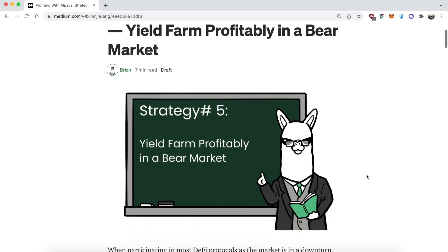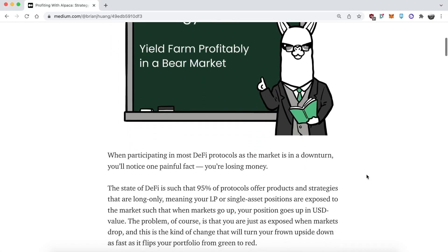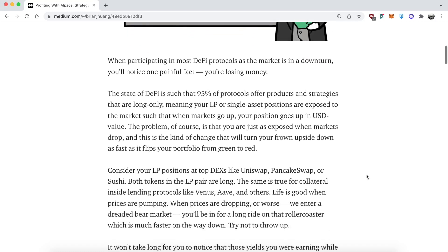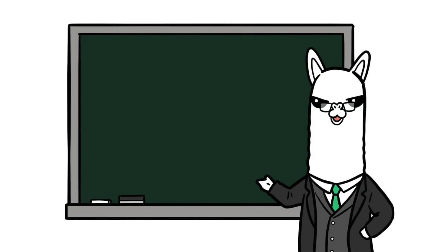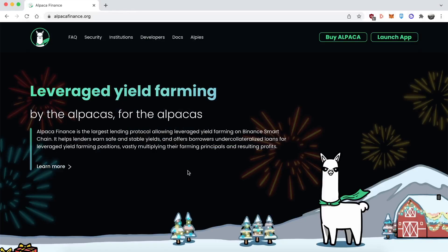This strategy is suitable for bear markets where you can gain upside by opening leveraged yield farming positions and borrow crypto assets such as BNB, ETH, or BTCB that you believe will drop in price. Borrowing above 2x is similar to shorting the asset you borrow. For example, you open a position on USDT/ETH and borrow ETH, so you're short on ETH. This is one of the only ways to remain profitable while yield farming in a bear market.